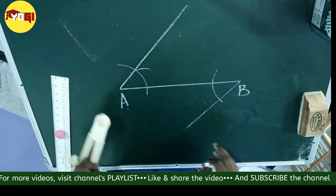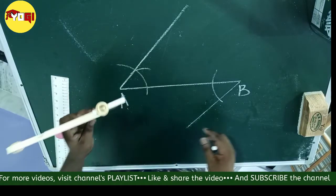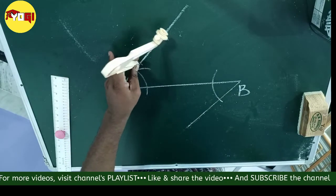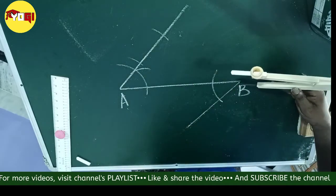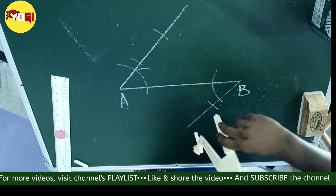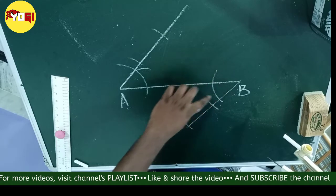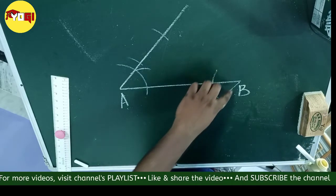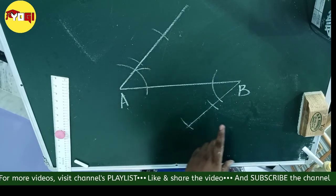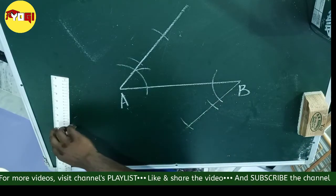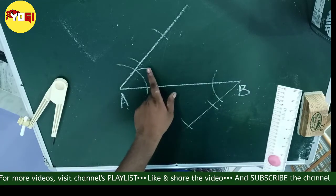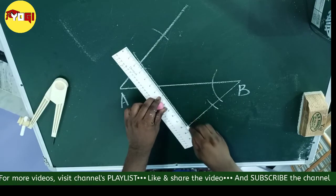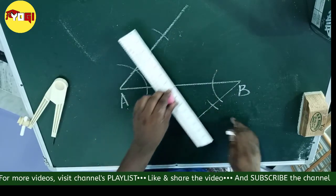Next step: since we have to divide this line into three equal parts, we cut two arcs on one angle line of any radius — here and here — and with the same radius we cut two arcs on the other angle line as well. We take it two times because we are dividing into three equal parts. If we had to divide into five equal parts we would take it four times; for seven equal parts, six times. Now join the lower cut on one side with the upper cut on the other side with a scale, and the upper cut on the first side with the lower cut on the other side.